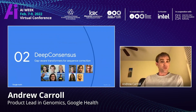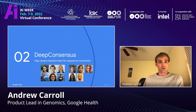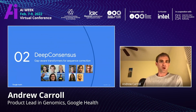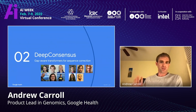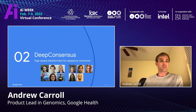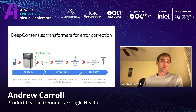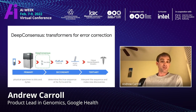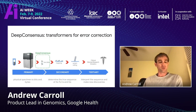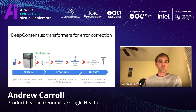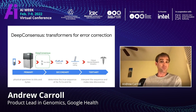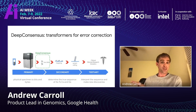I'm going to switch gears and talk about some other applications. One addresses the problem of error correction, and here we have a transformer network called DeepConsensus. DeepConsensus operates at a different point in the sequence generation life cycle, specifically at the conversion of sequence data from the instrument into the reads themselves.